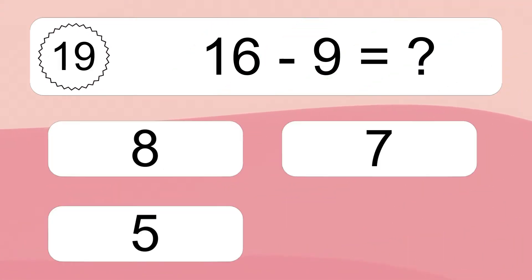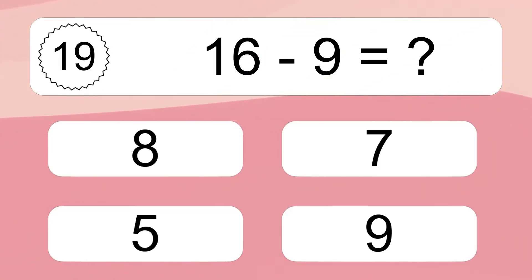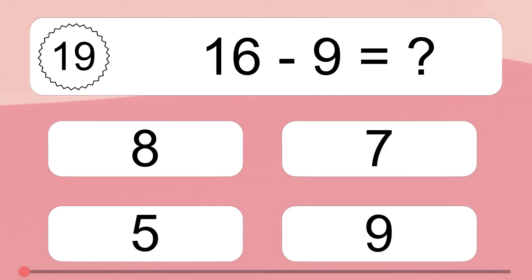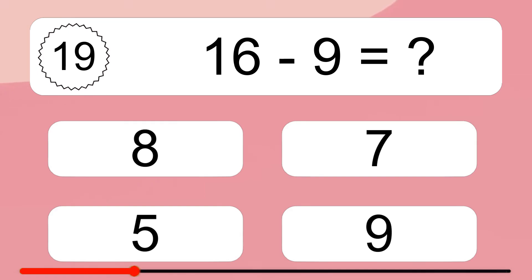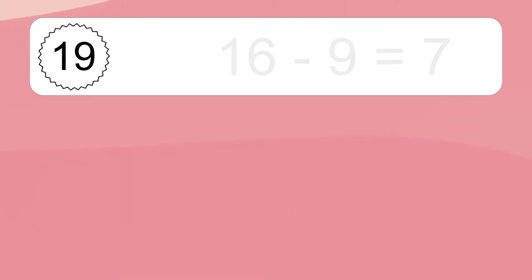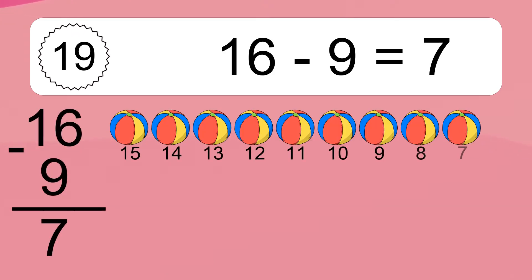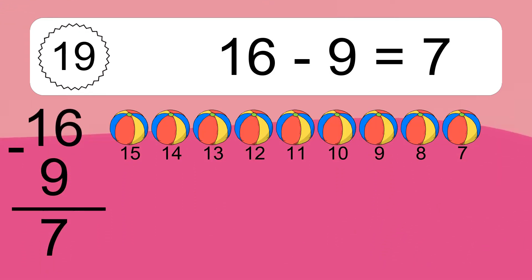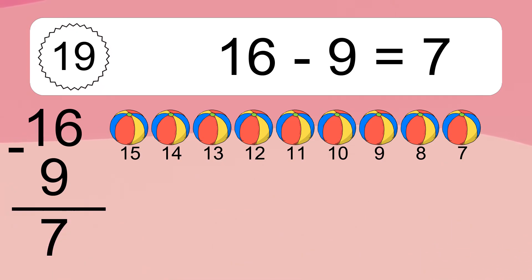16 minus 9 equals what? 16 minus 9 equals 7. Let's count it. 15, 14, 13, 12, 11, 10, 9, 8, 7.